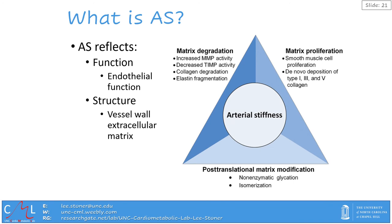Arterial stiffness is dependent on the function of the vessel, which in turn is dependent on endothelial function, and this can change within and between days. But what we normally believe we are reflecting through arterial stiffness is the structure of the vessel, which is dependent on the vessel wall extracellular matrix, depicted by the figure to the right.